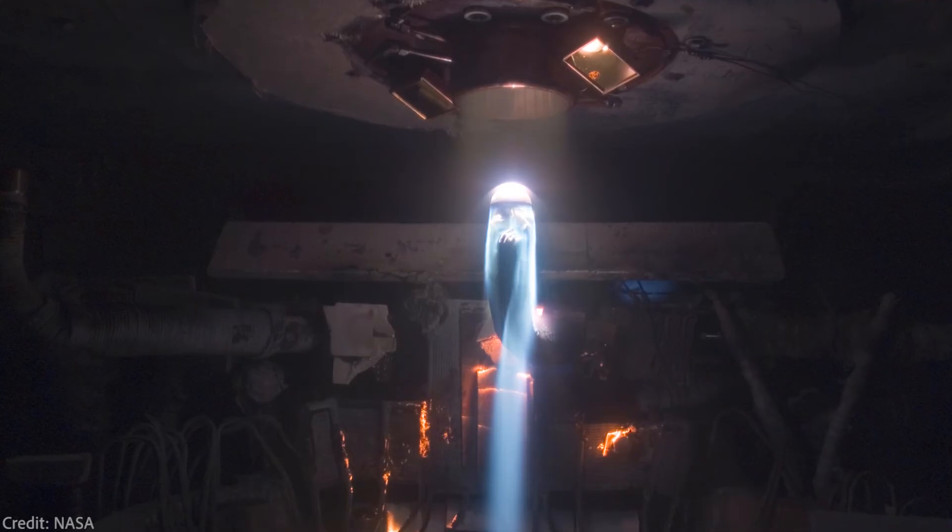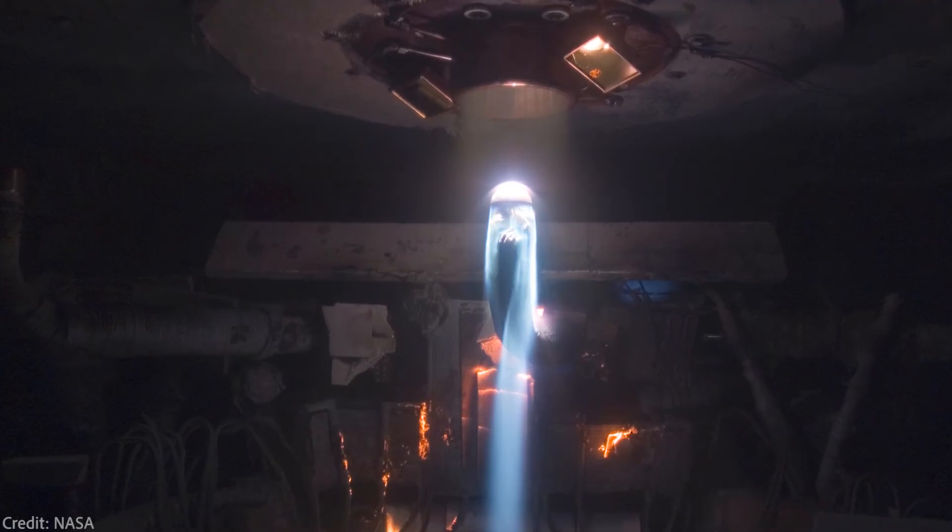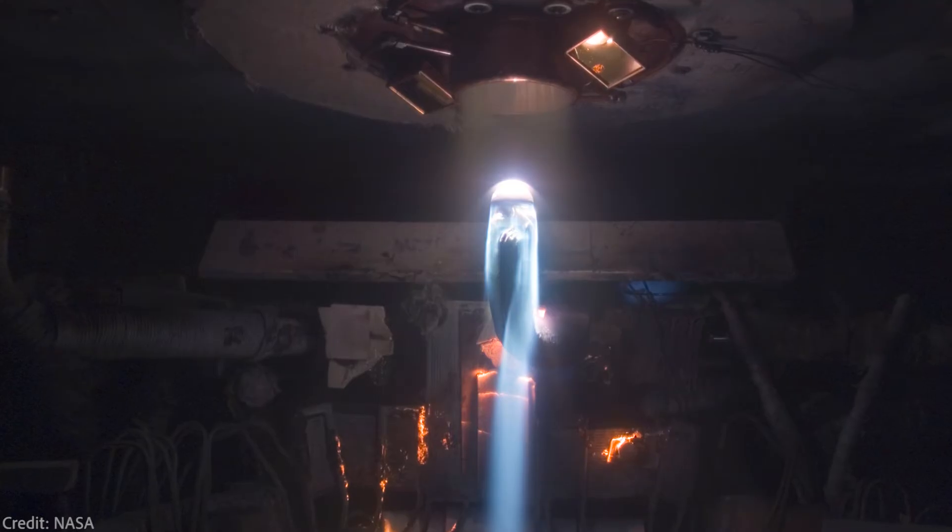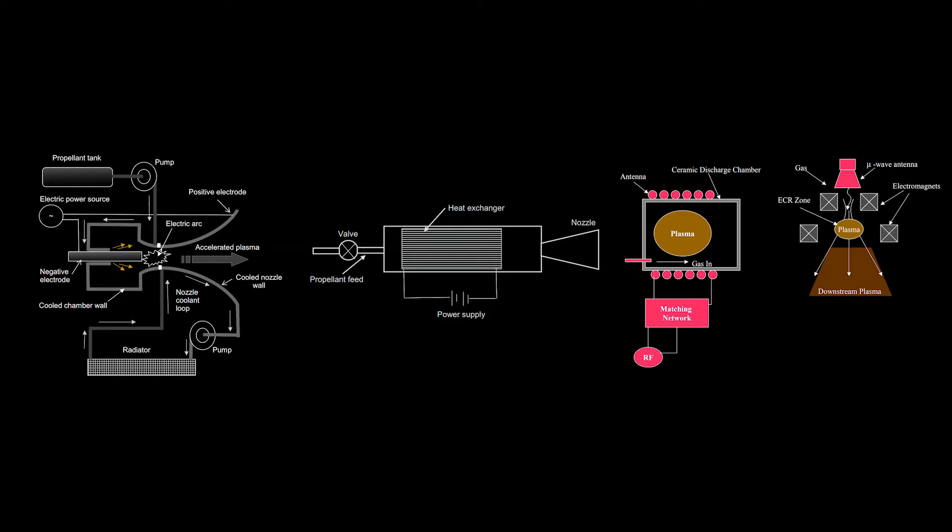In general, electrothermal engines suffer from the same problems and limitations of conventional chemical engines, like the maximum possible temperature of the heated propellant limits the exhaust velocity. And yet it is two to three times higher than that of chemical rockets. And electrothermal engines are used, for instance, on satellites in the lower Earth orbit.